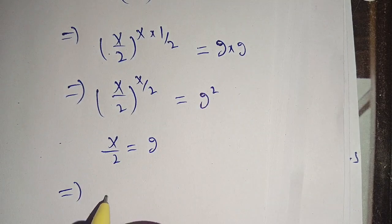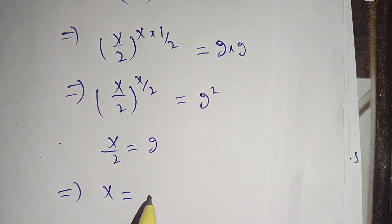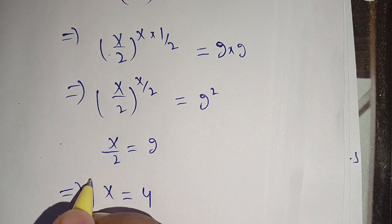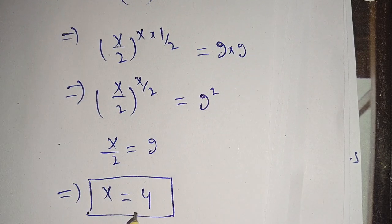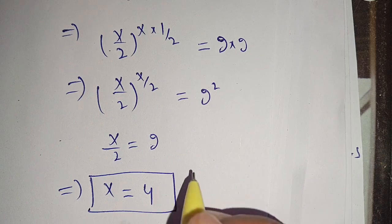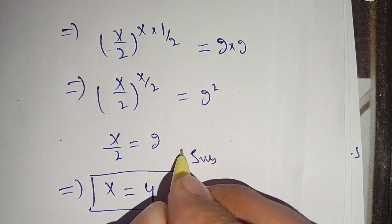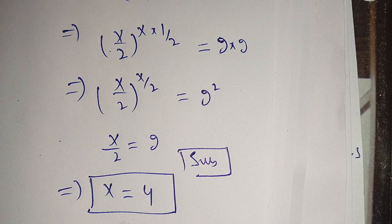From x/2 = 2, we get x = 2 × 2 = 4. So the value of x is 4. If you are new here, make sure to subscribe to our channel for more videos. See you in the next video — bye!